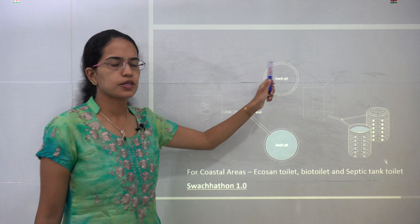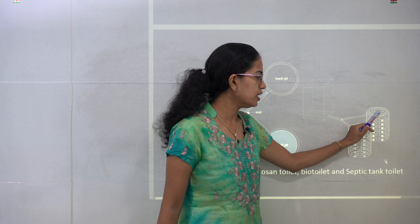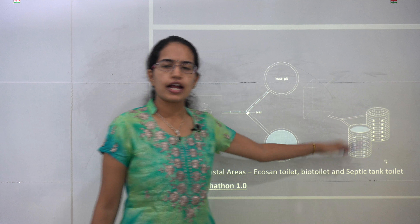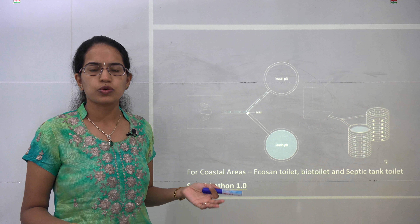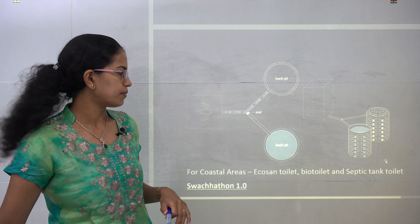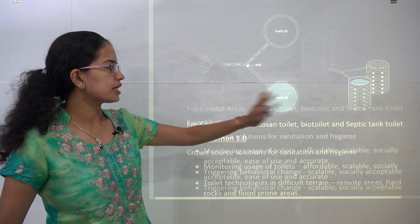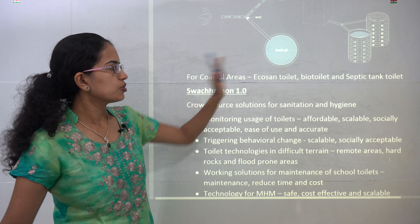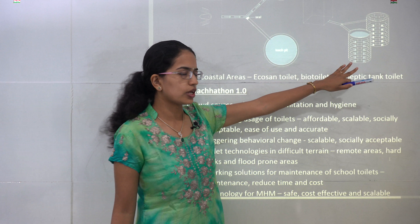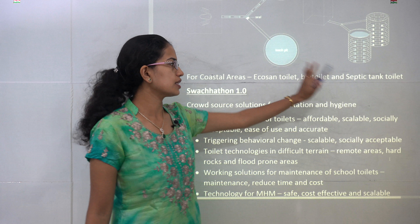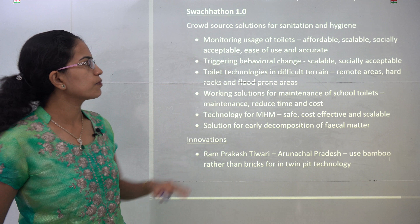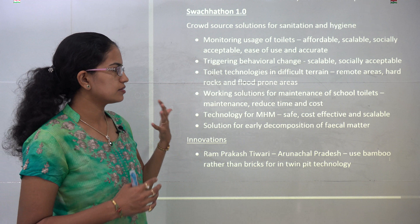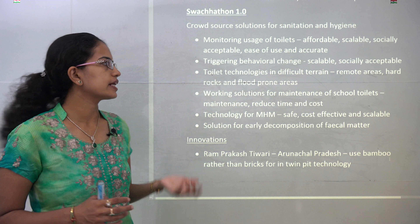The Swachhata Hi Seva campaign includes: construction of toilets; cleaning of parks, ponds, hospitals, and public places; building public and community toilets; changing behavioral habits; and promoting gender-sensitive information under gender guidelines 2017. There is also involvement of celebrities, the Anganwadi project, and corporate partnerships.